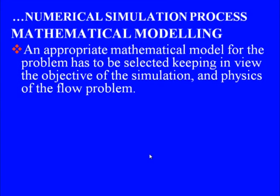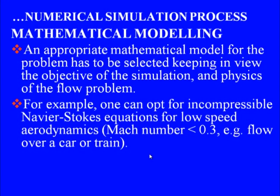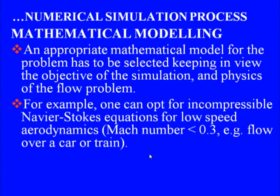Next, let us look at the mathematical modeling step. We must choose an appropriate mathematical model depending on the objective of the simulation and the physics of the flow problem. For instance, if we want to simulate flow over an automobile or a low-speed train — meaning trains running at less than 400 km/h where the Mach number would be less than 0.3 — we can use incompressible Navier-Stokes equations. We will have a detailed look at incompressible and compressible Navier-Stokes equations in the next module.